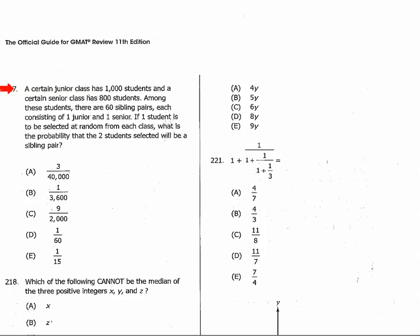What happens when we select the junior affects the chances when we select the senior. So what are the chances when we select a junior of selecting someone who could be a member of a sibling pair?